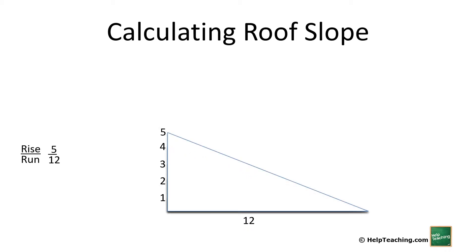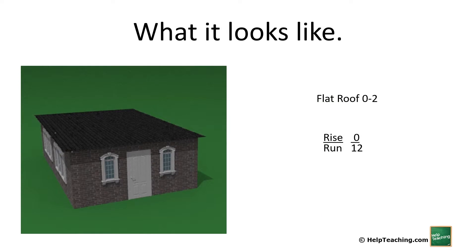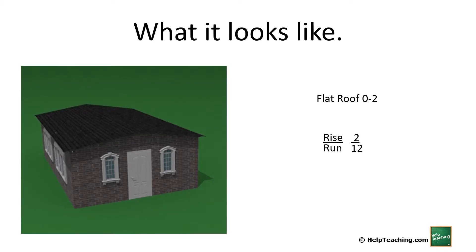So what does this look like in real life? A flat roof is generally termed as anything from 0 to 2, so this is a 0:12, a 1:12, and a 2:12. So these all classify as a flat roof.